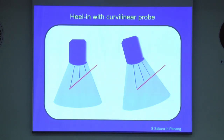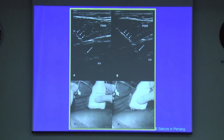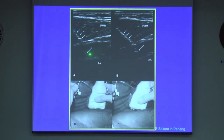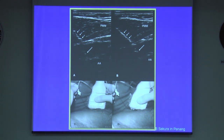You can use this heeling maneuver when using a curvilinear probe as well. If you tilt the probe like this, you can image a needle passing at a steeper angle better. These images show the infraclavicular brachial plexus block — the needle is inserted at a steeper angle. With the normal technique, the needle shaft and tip cannot be seen clearly. But by pressing the caudal end of the transducer more deeply into the patient, you can increase the needle-beam angle to see the needle better.